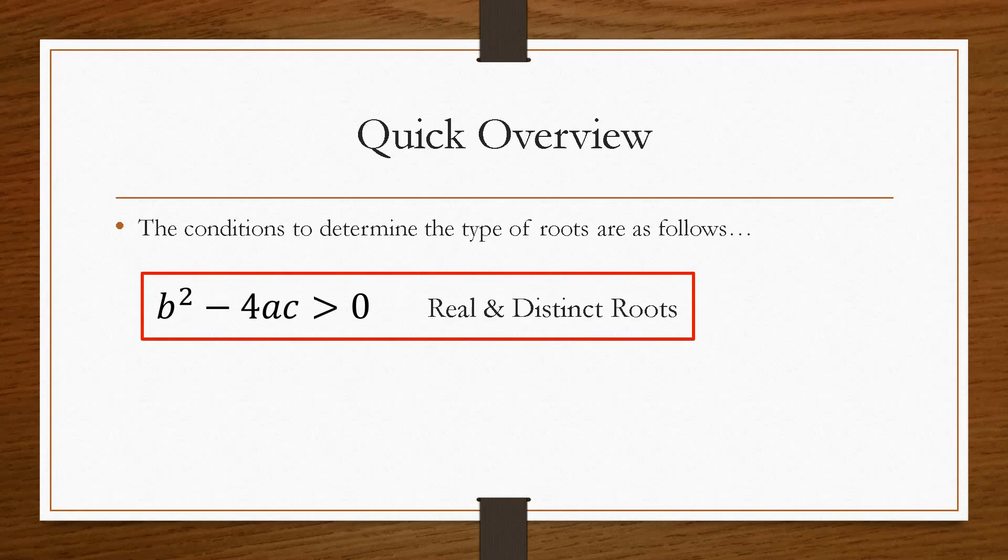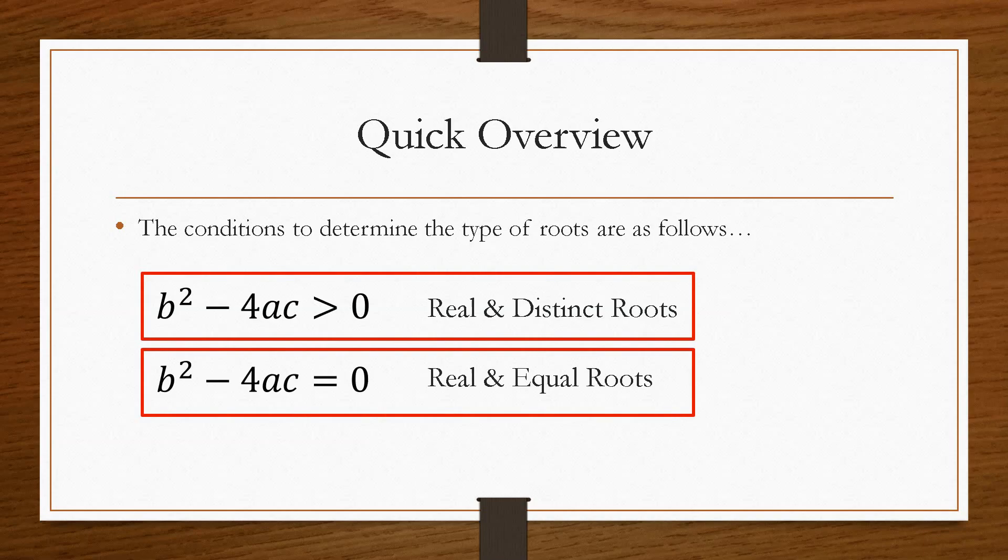Meaning that we have real numbers and they are different. If b squared minus 4ac is equal to zero, then we have real and equal roots. Meaning it is a real number and there is only one of them.